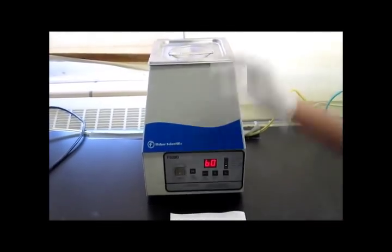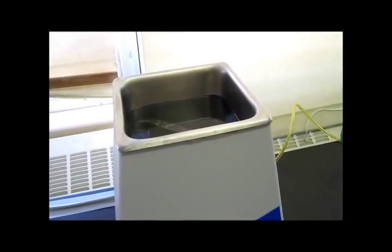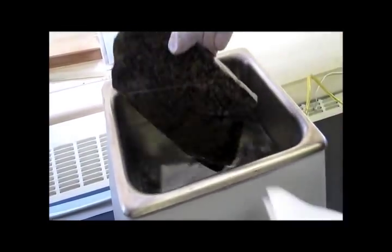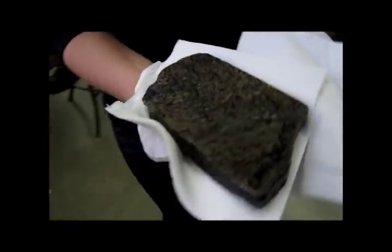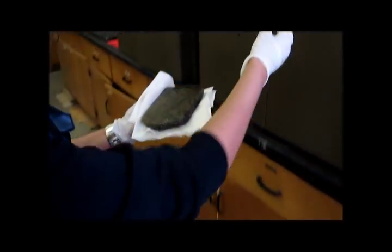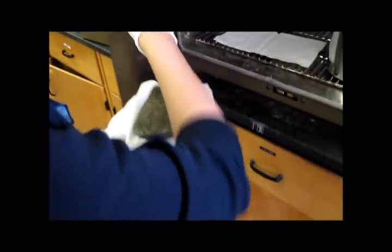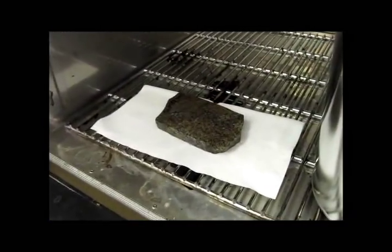After cleaning in the ultrasonic machine, the aggregate plates are heated in the oven at 60 degrees Celsius for a minimum of 30 minutes to remove absorbed water on the aggregate surface and provide a better bond between the asphalt binder and the aggregate.